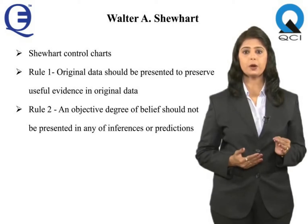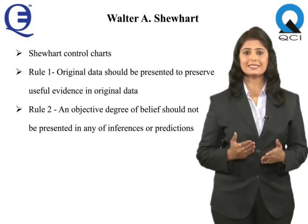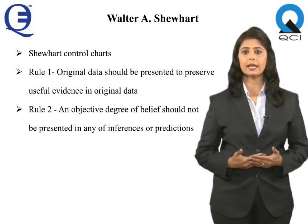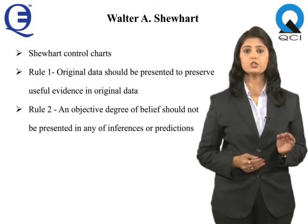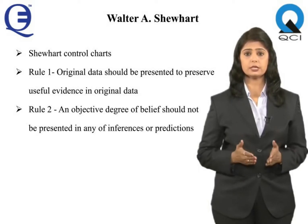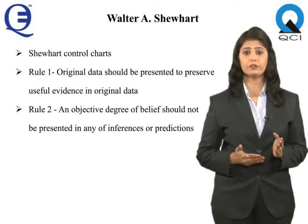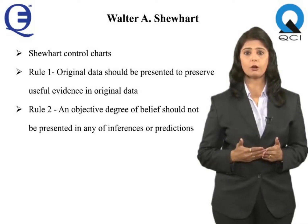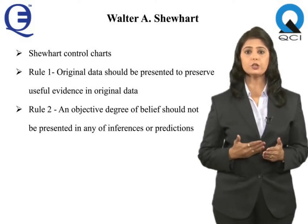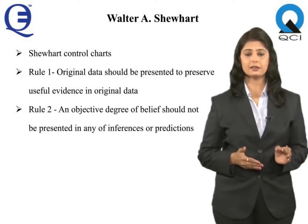The world knows Shewhart for the Shewhart control charts, and the world lives better for them. They are, however, only one of his statistical contributions. He leaves a rich legacy that will take years to absorb. For example, his Rules 1 and 2 on the presentation of data: Rule 1 — original data should be presented in a way that will preserve the evidence in the original data for all the predictions assumed to be useful. Rule 2 — any summary of a distribution of numbers should not give an objective degree of belief in any one of the inferences or predictions to be made, for that would cause human action significantly different from what this action would be if the original distribution had been taken as a basis for evidence.